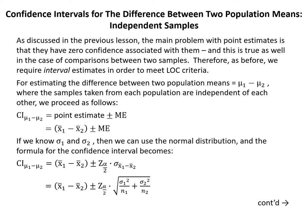For estimating the difference between two population means mu 1 minus mu 2, where the samples taken from each population are independent of each other, the confidence interval CI mu 1 minus mu 2 equals the point estimate plus or minus the margin of error, which equals X bar 1 minus X bar 2 plus or minus ME. If we know sigma 1 and sigma 2, then we can use the normal distribution, and the formula becomes X bar 1 minus X bar 2 plus or minus Z alpha over 2 times the square root of sigma 1 squared over n1 plus sigma 2 squared over n2.